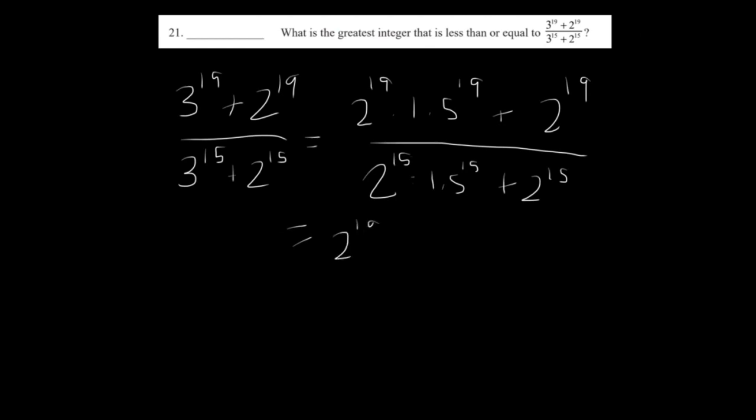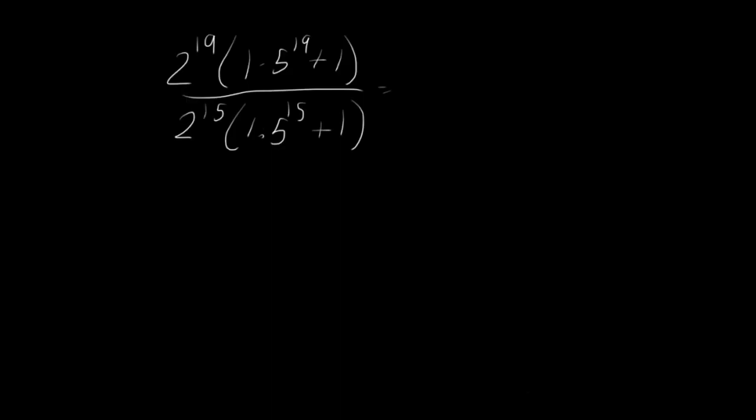On the numerator, if we take out 2 to the 19th, we are left with 1.5 to the 19th plus 1. And if we do the same thing in the denominator, it'd be 2 to the 15th times 1.5 to the 15th plus 1.